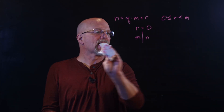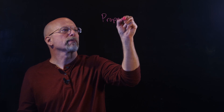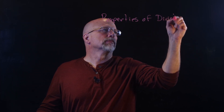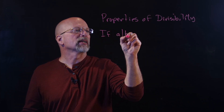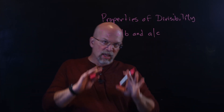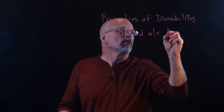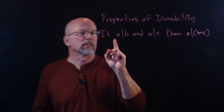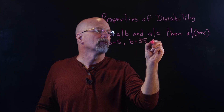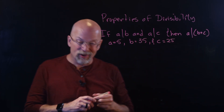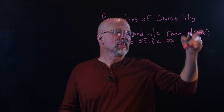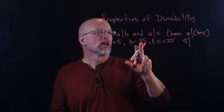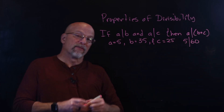Before we get to that, let's talk about some properties of divisibility. The first one is: if A divides B and A divides C, then A also divides the sum of B and C. For example, if A equals 5, B equals 35, and C equals 25 — 5 divides 35 plus 25, which is 60, and 5 goes into 60 twelve times.